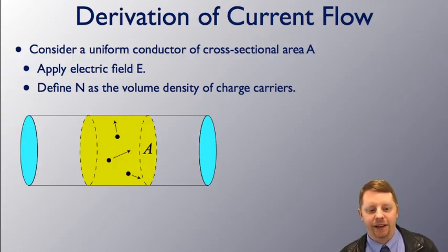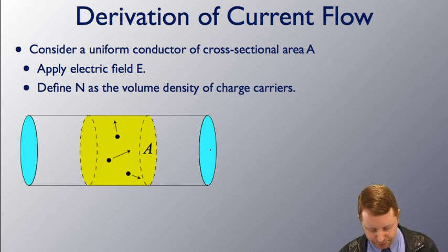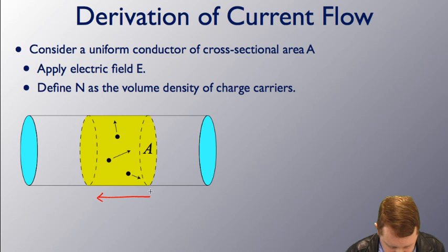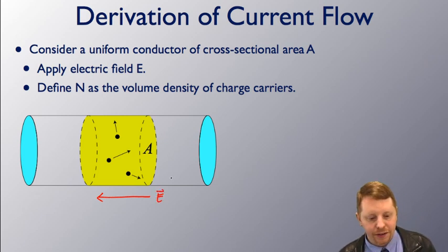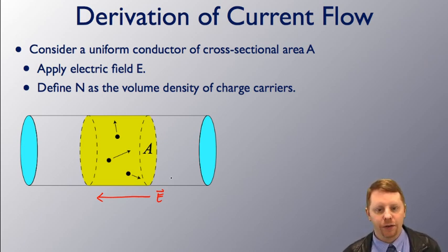Now let's see if we can derive an expression for current flow. Let's consider a uniform conductor of cross-sectional area A, and we'll apply an electric field. So there's our electric field in that direction. Now electrons in the conductor are going to move randomly with those thermal velocities on the order of a million meters per second. But when we apply that electric field, there is some small net movement of electrons on the order of maybe half a centimeter per second opposite the direction of the electric field, and we call this the drift velocity.